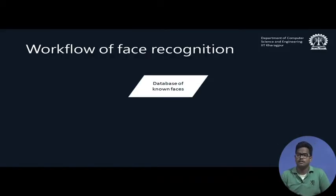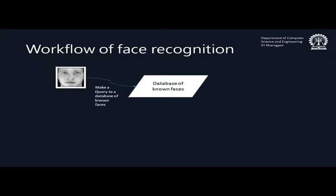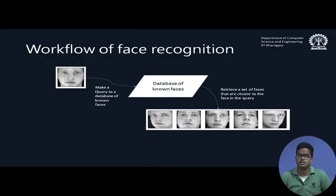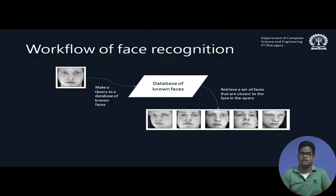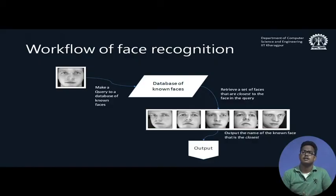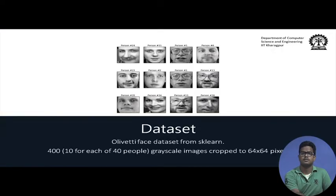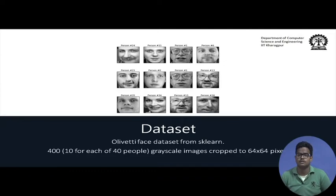The general workflow of any face recognition algorithm is as follows. First, we have a database of known faces. When a new face is presented, we query the database. The database returns a set of faces closest to the query face — all of which are known. We then choose the face most similar to the query as our output. We will study how principal components analysis fits into this workflow in this section of the tutorial.